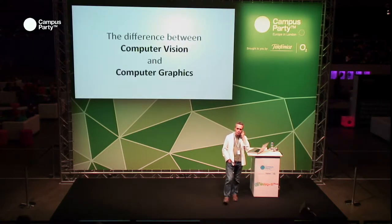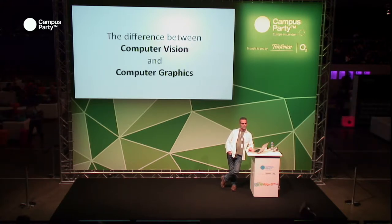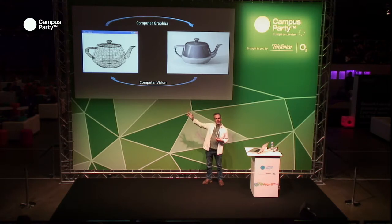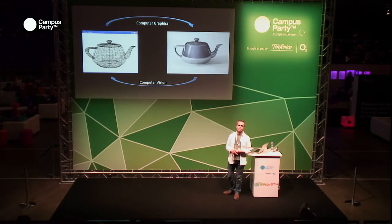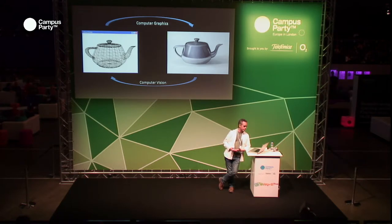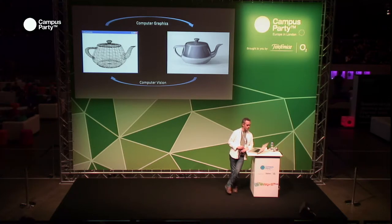One of the first things I want to bring out is the difference between computer vision and computer graphics, because a lot of people get confused by that. Computer graphics starts with a three-dimensional model — represented here by a wireframe — and turns it into a two-dimensional picture. Computer vision is the opposite: it starts with pictures and tries to produce models. So in some sense, they're opposites of one another.